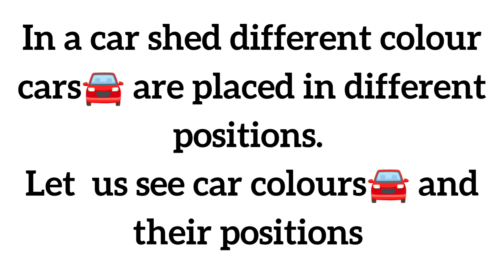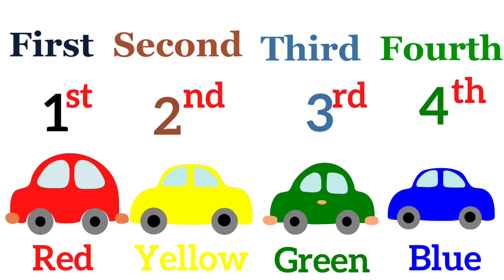Let us see the car colors and in which positions they are placed. Red color car is placed in 1st position. Yellow color car is placed in 2nd position. Green color car is in 3rd position. And blue color car is placed in 4th position.